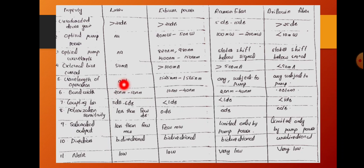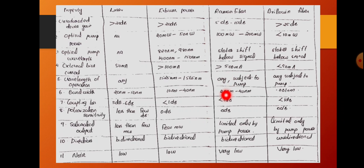Regarding the wavelength of operation, for the laser it can be any wavelength. For erbium fiber, the emitted light has a wavelength range from 1525 nm to 1560 nm. For Raman fiber, it can produce any wavelength depending on the scattering process and the Stokes shift — any wavelength subjected to the pump. Similarly, Brillouin fiber can also operate at any wavelength subjected to the pump signal.